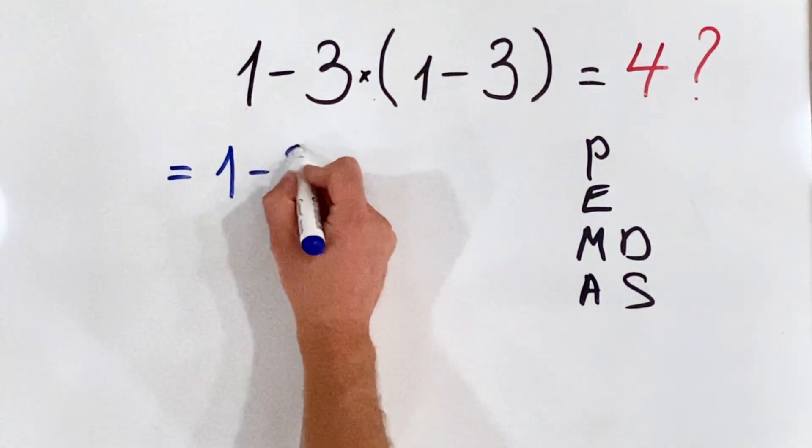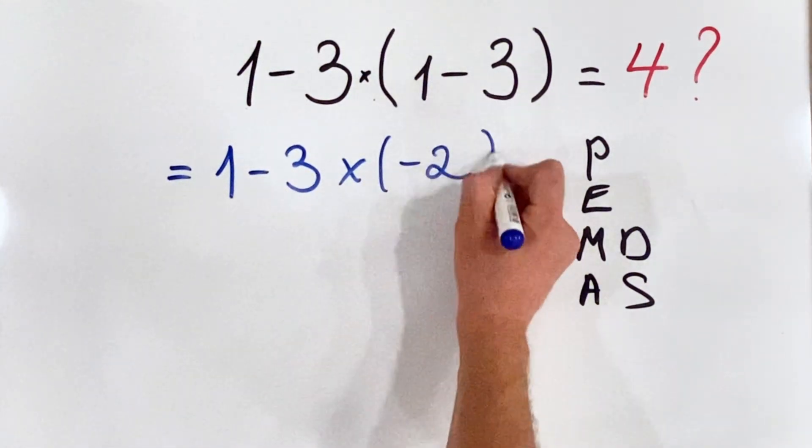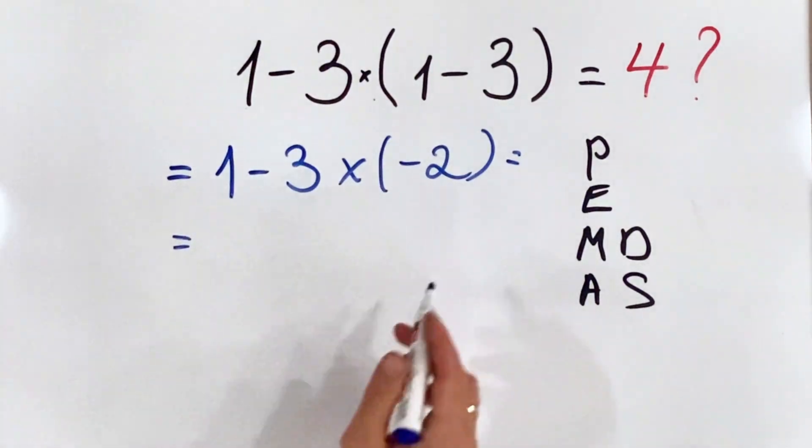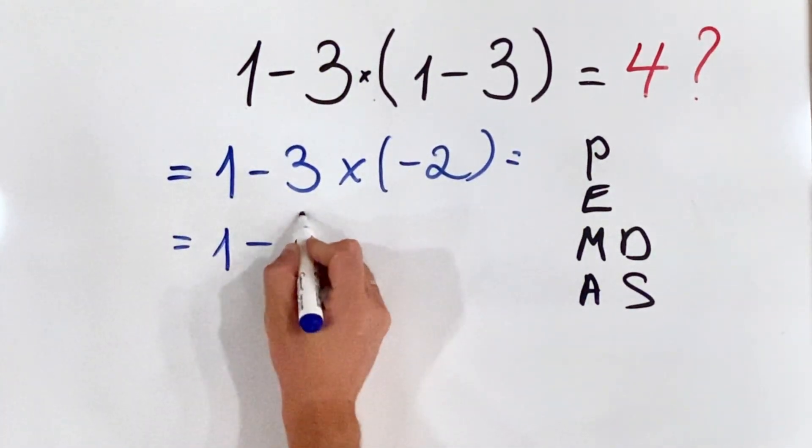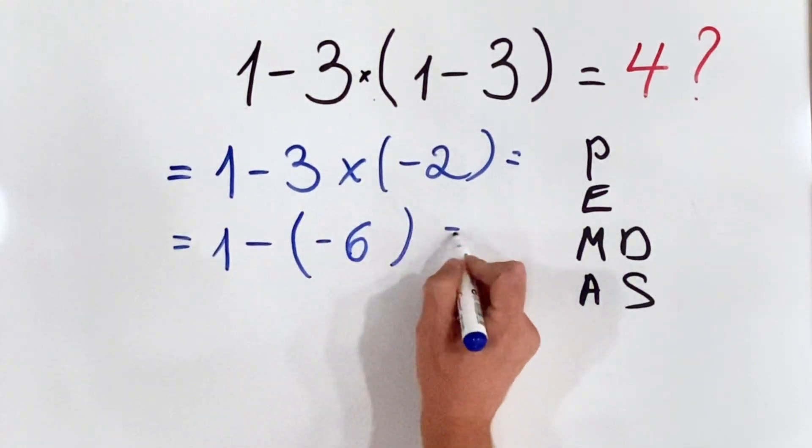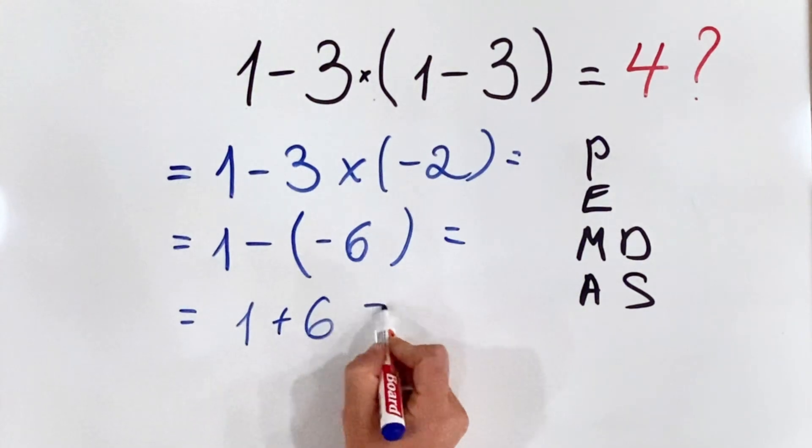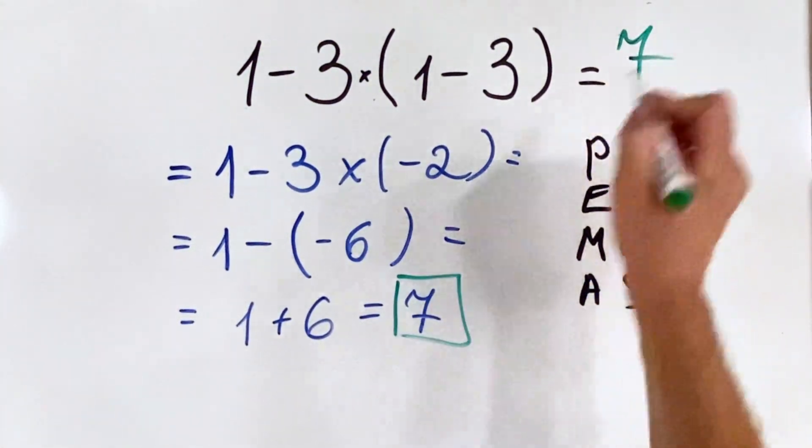We have 1 minus 3 times (1 minus 3). First solve the parenthesis: 1 minus 3 equals minus 2. So we have 1 minus 3 multiplied by minus 2. 3 multiplied by minus 2 is minus 6, so 1 minus minus 6 equals 1 plus 6, which equals 7. The correct answer is 7.